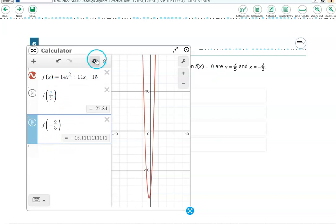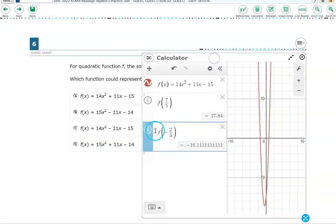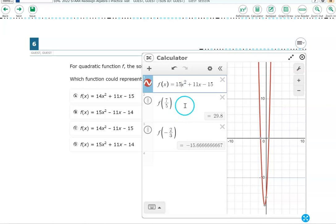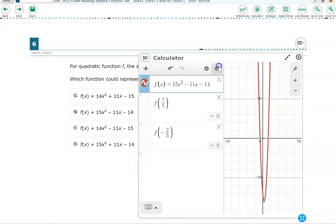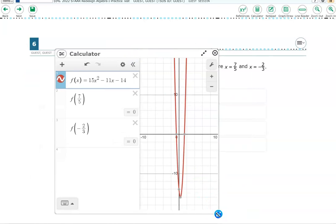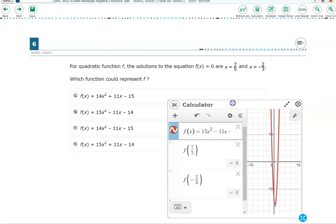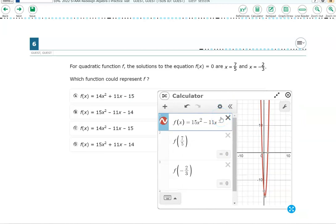So let's change this answer choice and type answer choice B. So let's get rid of this. This should now be a 15x squared minus 11x minus 14. And look at that. Both of those are now equal to 0. So let's read the question. I hate that this is covered up. I like to reread it before I choose my answer. So let's move this down. Now we can see everything. For the quadratic function, the solutions are f of x equals 0. The solutions are, and that's true. So the correct answer in this case was answer choice B.